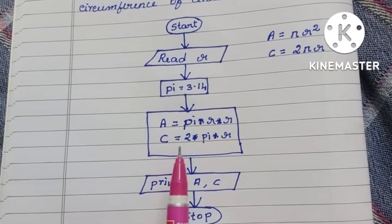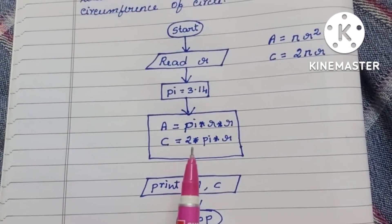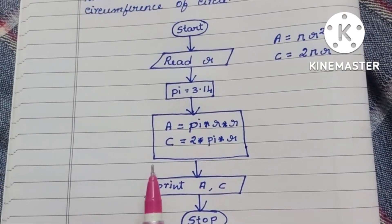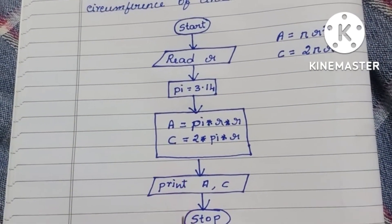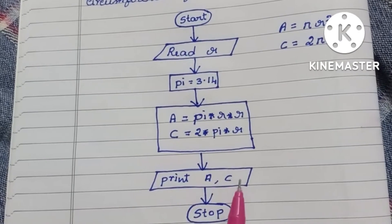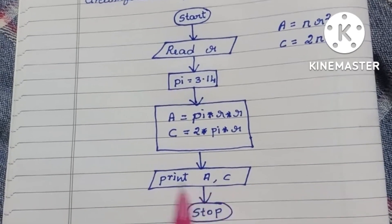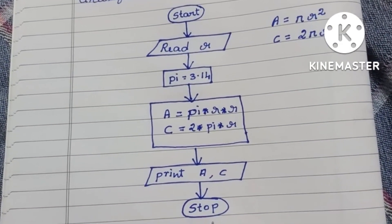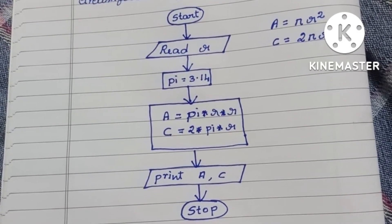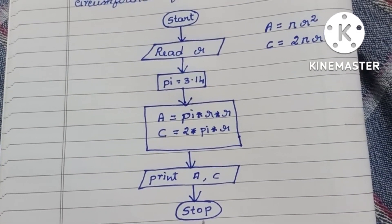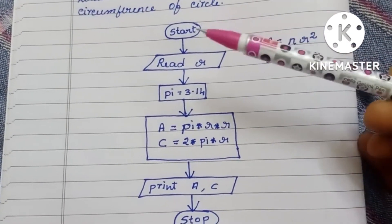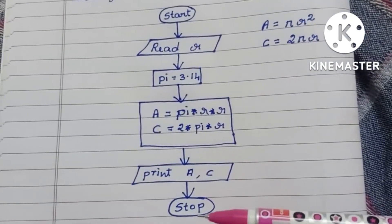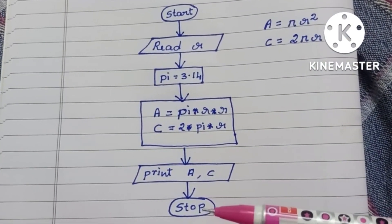Next, the circumference of the circle is 2 × pi × r, written within a rectangular shape. Then we print the area and circumference using a parallelogram shape. Finally we stop the flowchart using a stop statement — a flowchart always starts with a start statement and ends with a stop statement.